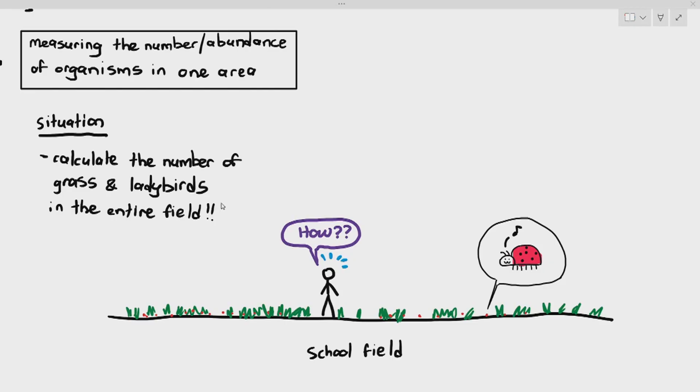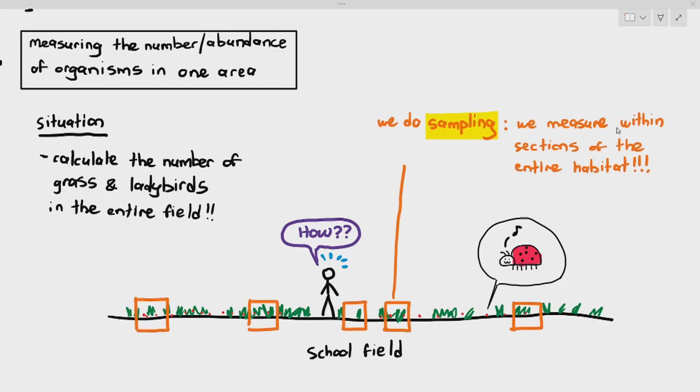So what we do in those kind of situations is, instead of counting the entire field, we will select sections of the field and then we will measure within sections of the entire habitat. You will count the population of grass and the population of ladybirds and then you can extrapolate it to find the number in the entire field. This process is known as sampling. We don't just do sampling for counting insects. We will also do sampling when we are carrying out surveys in people.